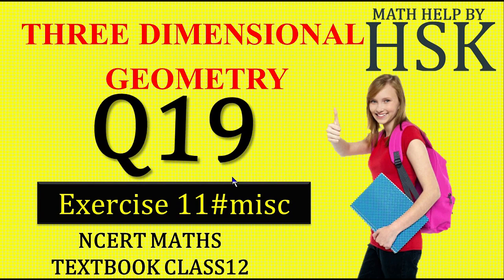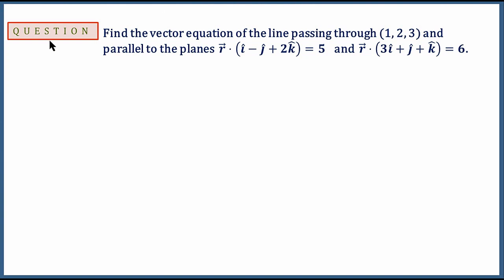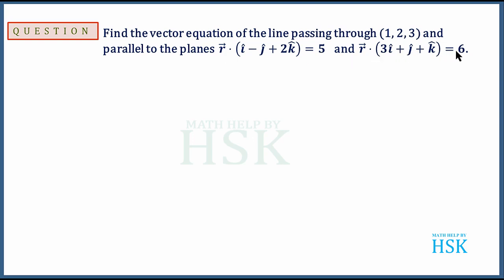I am taking question number 19 of miscellaneous exercise of chapter 11. The question is: find the vector equation of a line passing through the point 1, 2, 3 and parallel to the planes r dot (i minus j plus 2k) equals 5 and r dot (3i plus j plus k) equals 6.